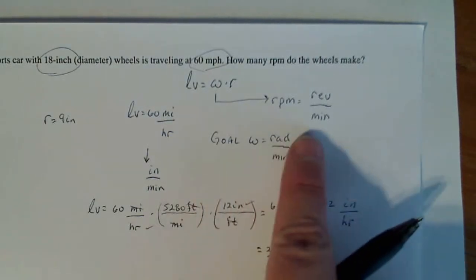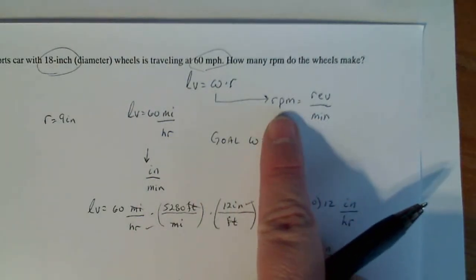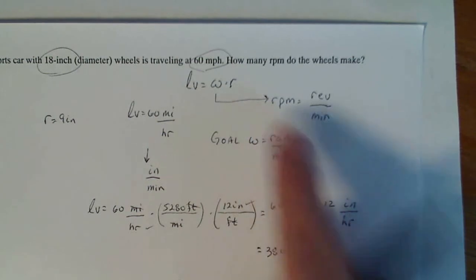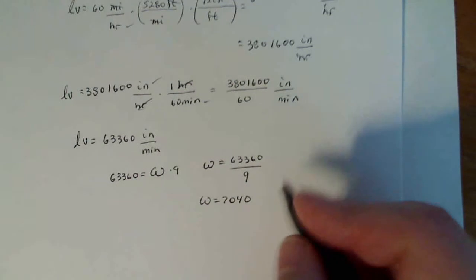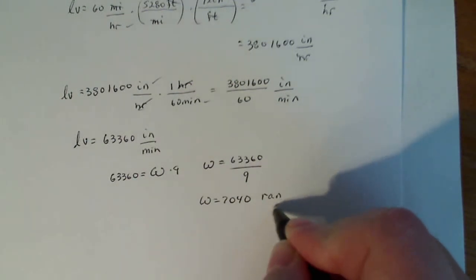So then one last bit, I have to convert my omega into revolutions. So I know that the unit of measure on my omega is radian per minute.